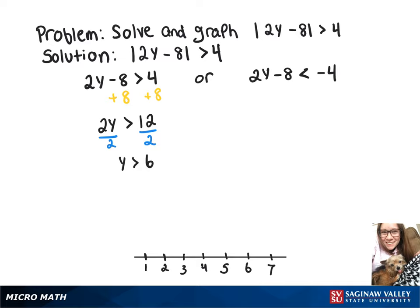So now going back to the other one, we're going to add 8 to both sides of that. And that leaves us with 2y is less than 4. So now we're going to divide by 2 again, giving us y is less than 2.